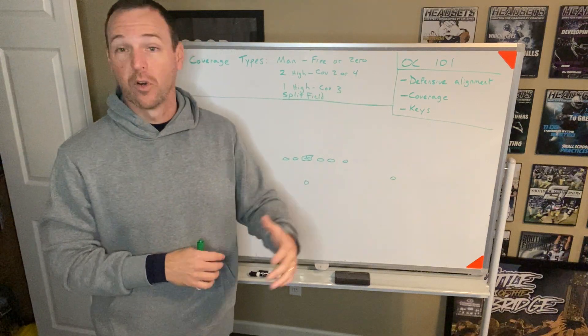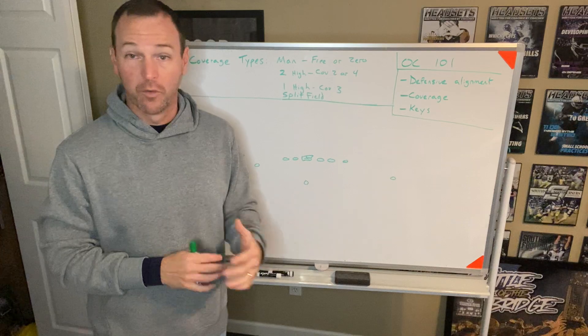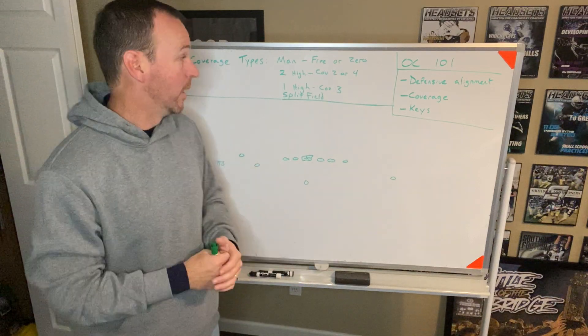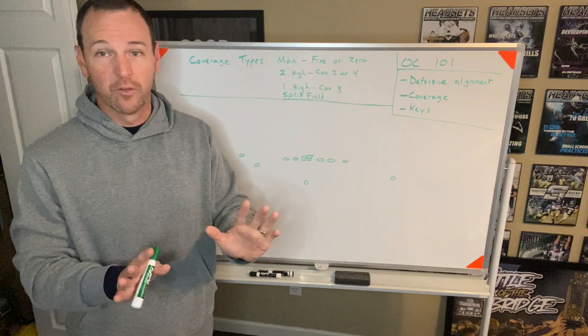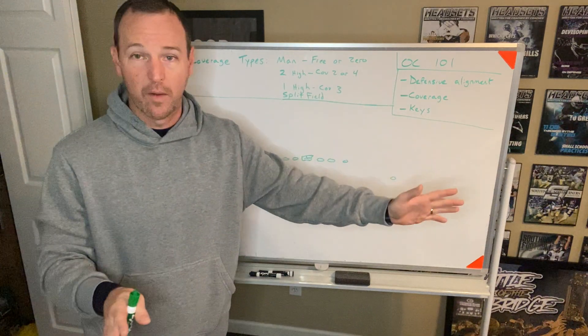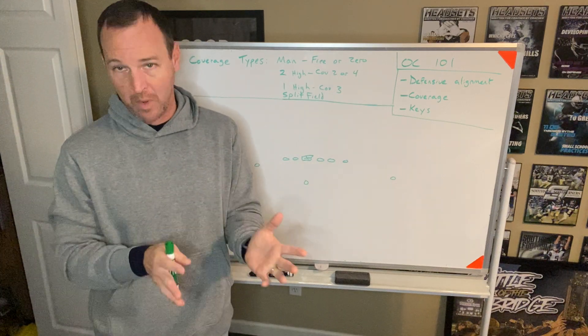The other coverages are all flavors of zone, where a player is responsible for a certain area on the field. And there are basically two major types of zone, and then defensive coordinators are probably getting mad because they have 35 in their playbook. There's two major kinds, and they flavor them up.